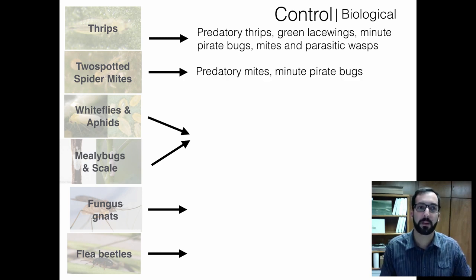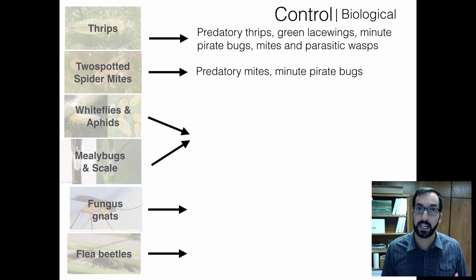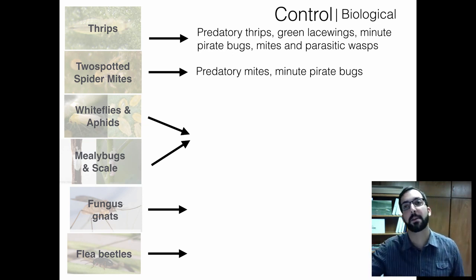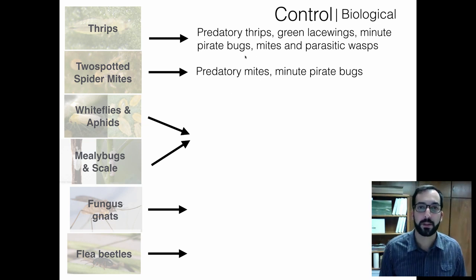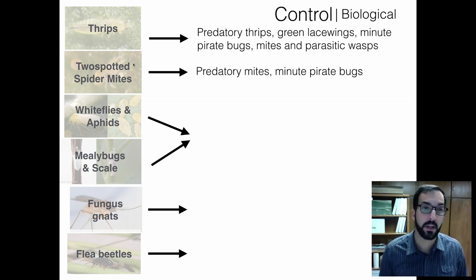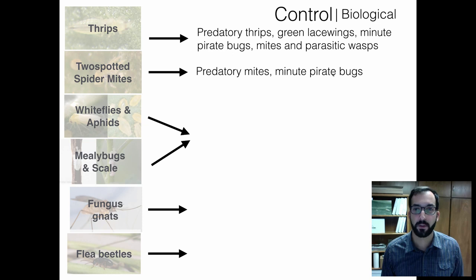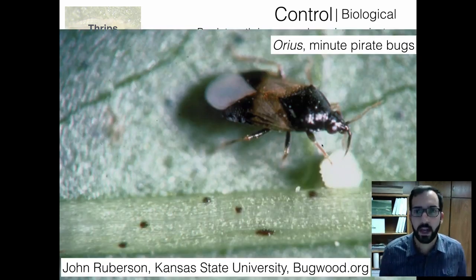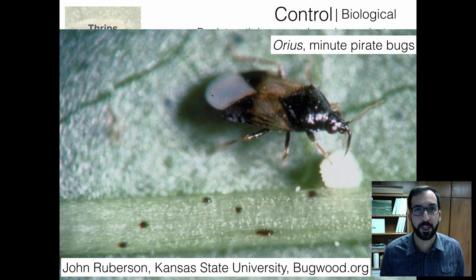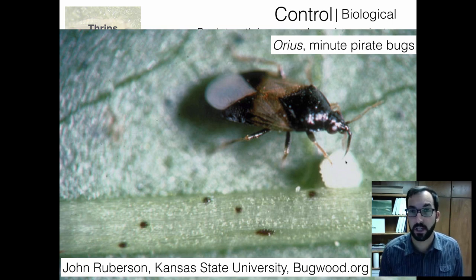For two-spotted spider mites, predatory mites are very prevalent and work very well — naturally or when released. This is why some insecticides when applied can cause a problem, because they may have unintentionally killed predators you didn't know were there. Dry, dusty conditions or high fertilizer can cause spider mite populations to explode. Minute pirate bugs are also beneficial for both thrips and spider mites — they are very small, have a distinct white diamond shape on the rear, and have a sucking-piercing mouthpart that feeds on eggs or young life stages of small insects.